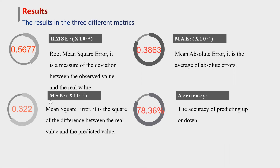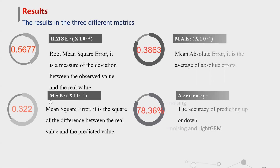MAE is Mean Absolute Error — it is the average of absolute errors and can better reflect the actual situation of the predictive value error. RMSE is Root Mean Square Error, a measure of the deviation between the observed value and the real value, often used as a standard for prediction results of machine learning models. MSE is Mean Square Error — it is the square of the difference between the real value and the predictive value, then the sum is averaged. The accuracy is for predicting the up or down in the 5-bar period. The best RMSE in this experiment is about 0.56×10⁻³, the best MAE is about 0.38×10⁻³, and the best MSE is about 0.32×10⁻⁶. The accuracy is about 78%.